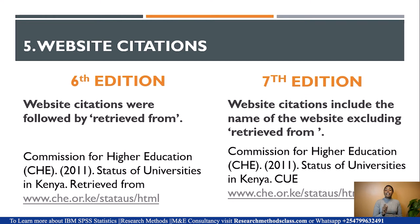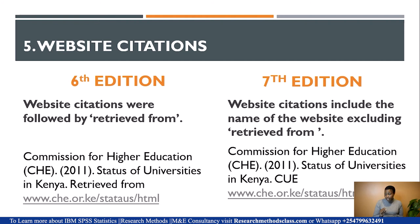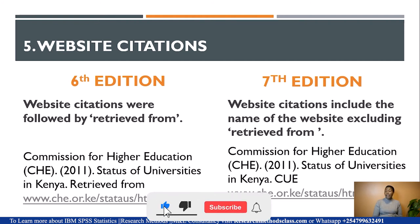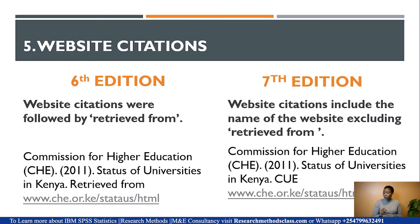For website citations, the 6th edition required you to write 'Retrieved from' followed by the URL. In the 7th edition, you exclude 'Retrieved from' and instead include the name of the website. For example: Commission for Higher Education, 2011, with the title 'Status of Universities in Kenya,' followed by the website name — CUE or Commission for University Education — and then the URL. The 6th edition also did not include the name of the website.